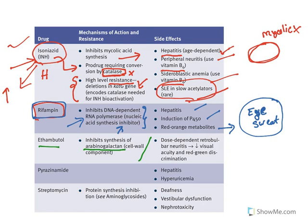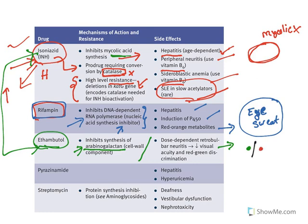Ethambutol inhibits a cell wall component known as arabinogalactan. While both isoniazid and ethambutol inhibit the cell wall, isoniazid directly inhibits mycolic acid whereas ethambutol targets arabinogalactan. Ethambutol causes dose-dependent visual disturbances — patients lose the ability to differentiate between green and red, which is problematic for reading traffic signals.